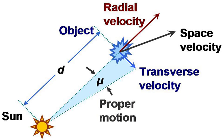A proper motion of 1 arcsecond per year at a distance of 1 light year corresponds to a relative transverse speed of 1.45 kilometers per second.